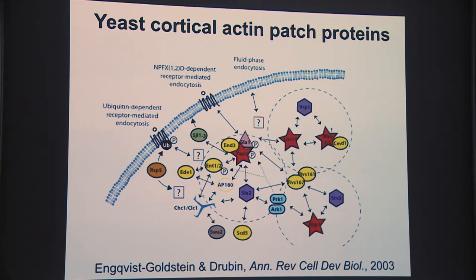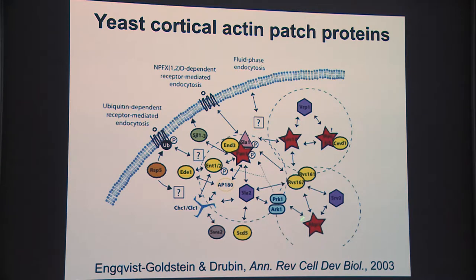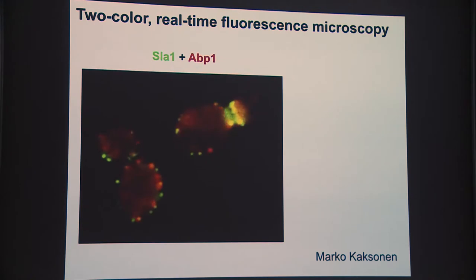Marco decided to tag pairwise combinations of proteins in this network with green and red fluorescent protein and look at live cells expressing both proteins simultaneously—doing two-color imaging. The first pair he looked at, he tagged ABP1 and SLA1. This SLA1 protein turns out to be interesting because it's an endocytic adapter—it binds directly to endocytic cargo, to the pheromone receptor in budding yeast.